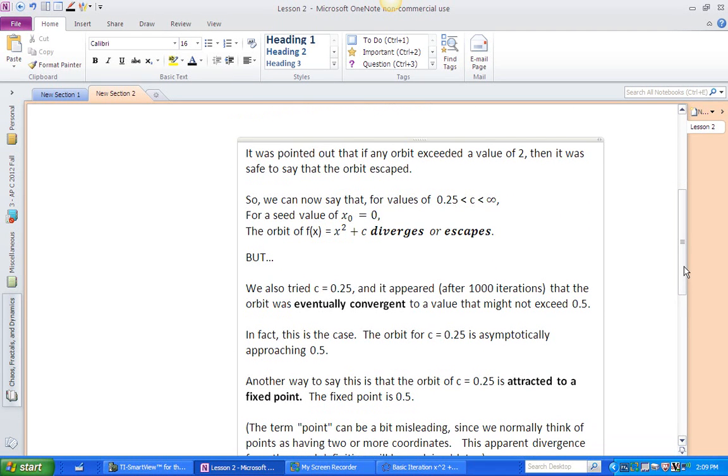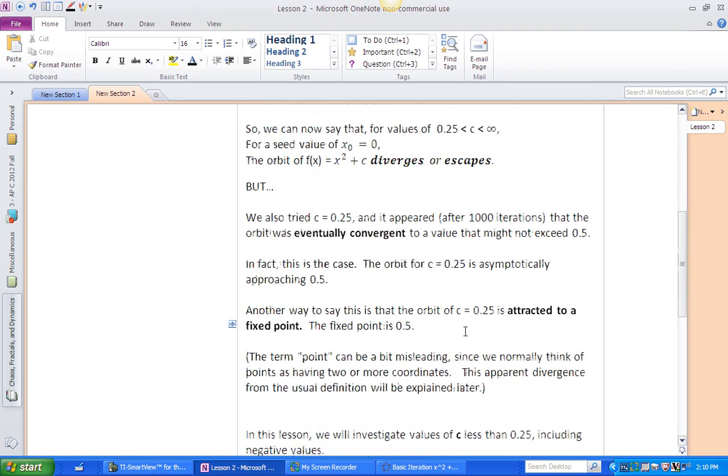We'll use those terms pretty much interchangeably. But when we concluded the first lesson, we tried C equals 0.25, and we did a thousand iterations, and it didn't escape. It seemed to be settling down, eventually converging to a value that looked like it was around 0.5, a little less. In fact, this is the case, the orbit is asymptotically approaching 0.5. We'll prove that later on, right now.